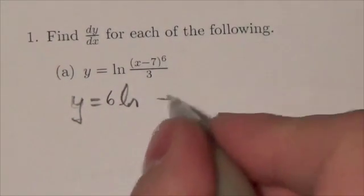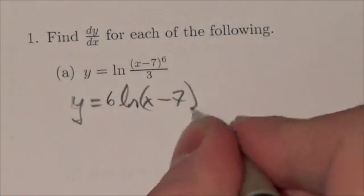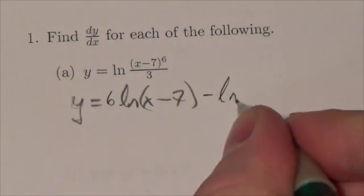So this will end up becoming the natural log of x minus 7. Sorry, 6 times the natural log of x minus 7 minus the natural log of 3.